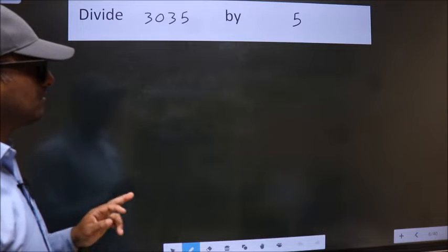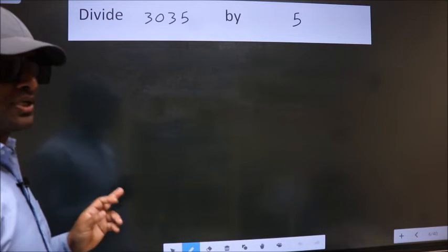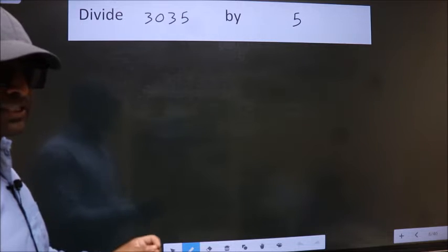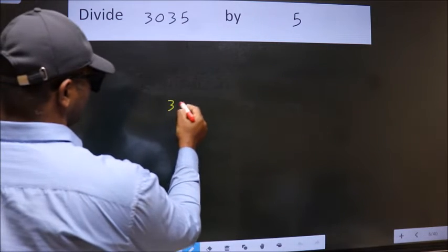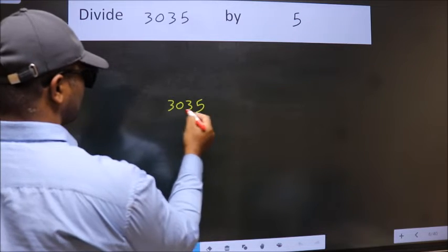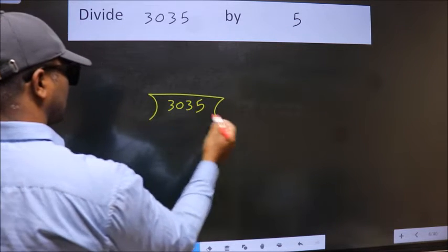Divide 3035 by 5. To do this division, we should frame it in this way. 3035 here, 5 here.